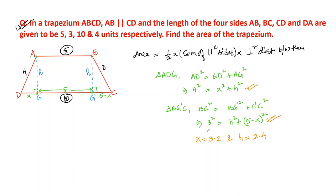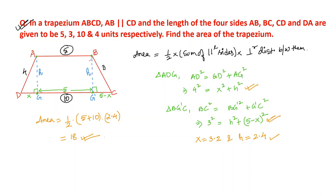The perpendicular distance between the two parallel lines is 2.4 units. So the area of the trapezium is half × (5 + 10) × 2.4 = half × 15 × 2.4 = 18 square units. By dropping perpendiculars we can find the height of the trapezium and then directly use the formula to find its area.